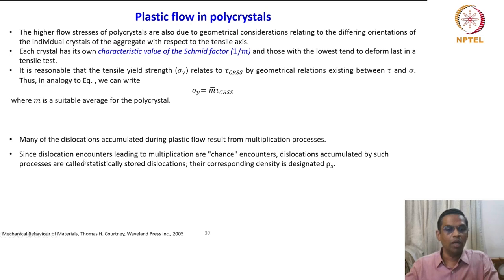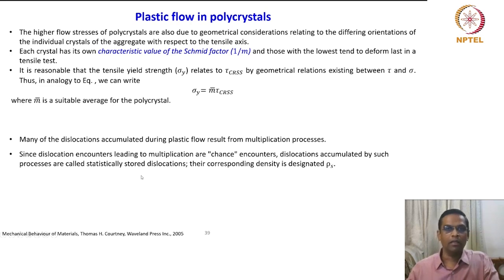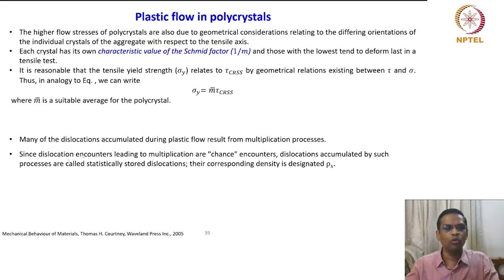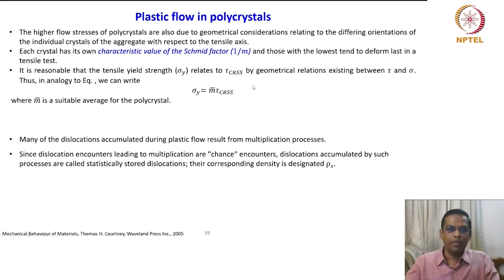Now we are classifying the kinds of dislocations generated during plastic deformation. Before going to this description, I want to add a few more points. We are looking at the grains in a polycrystal — the grain which exhibits the highest Schmid factor means that grain is most favorably oriented for slip; that is the physical picture.